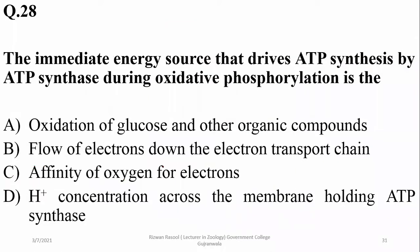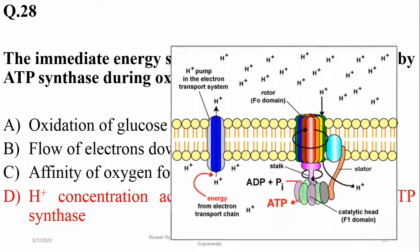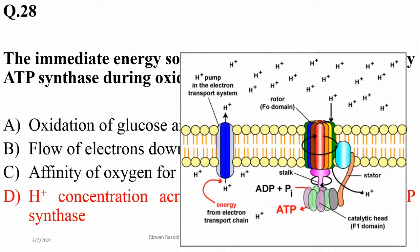The immediate source that drives ATP synthesis by ATP synthase during oxidative phosphorylation is the hydrogen ion concentration gradient across the membrane holding ATP synthase. This gradient is responsible for the generation of ATP, which causes movement of hydrogen ions across the enzyme, and ultimately ATP is generated.